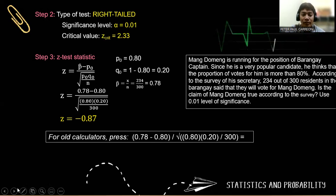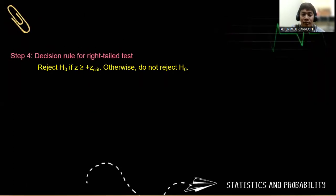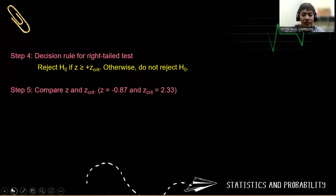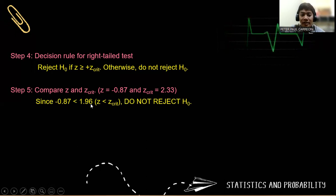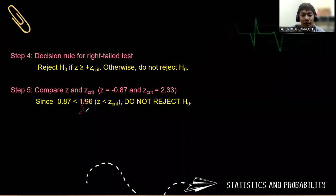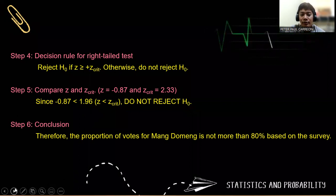Since it is a right-tailed test, we compare negative 0.87 to the critical value of positive 2.33. The decision rule for a right-tailed test is: reject if the Z computed is greater than the critical value. Since negative 0.87 is less than 2.33, the decision is to fail to reject the null hypothesis. Therefore, the proportion of votes for Mang Domingue is not more than 80% based on the survey.